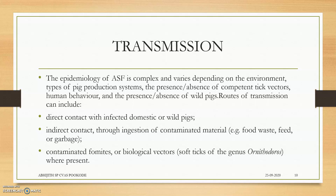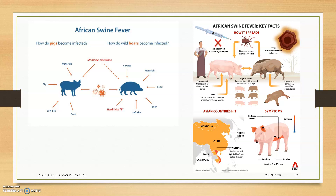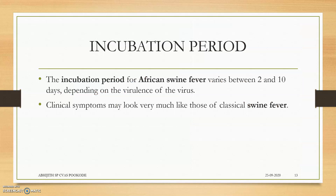Stomoxys calcitrans can also transmit the disease. These are the cycles and epidemiological areas where the disease persists. The incubation period depends on the health status of the animal and is normally 2 to 10 days.